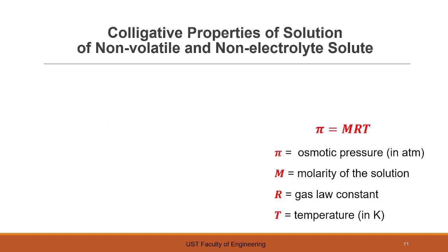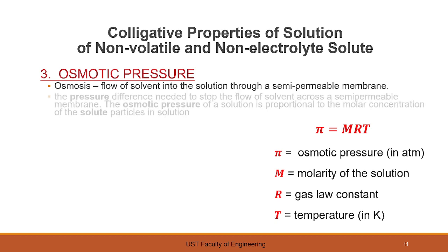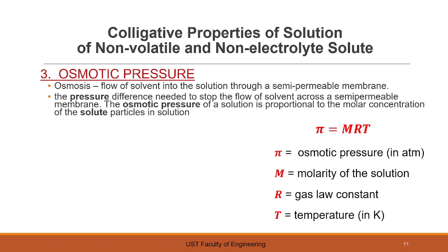Another colligative property is osmotic pressure. Osmosis is the flow of solvent into the solution through a semi-permeable membrane. The pressure difference needed to stop the flow of solvent across a semi-permeable membrane is called the osmotic pressure. The osmotic pressure of a solution is proportional to the molar concentration of the solute particles in the solution. This semi-permeable membrane allows some molecules to pass through while blocking the passage of other molecules.